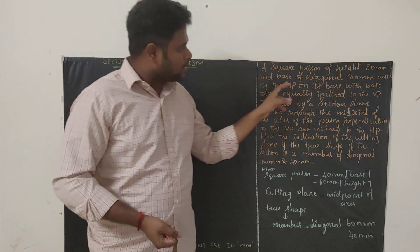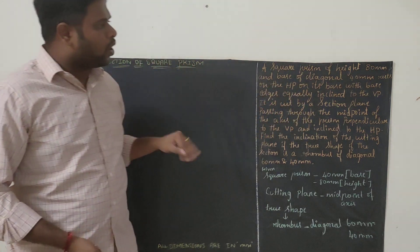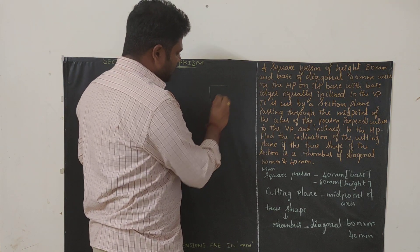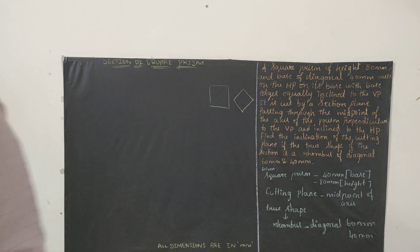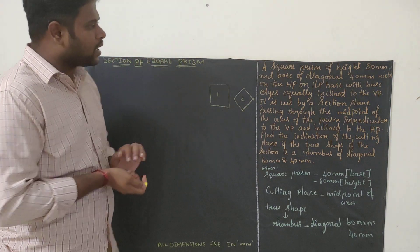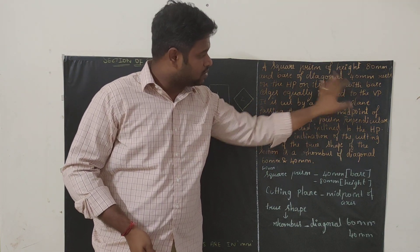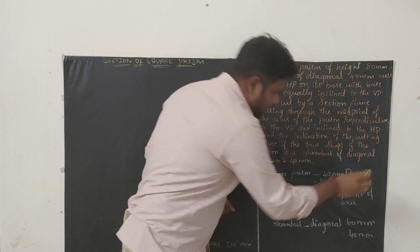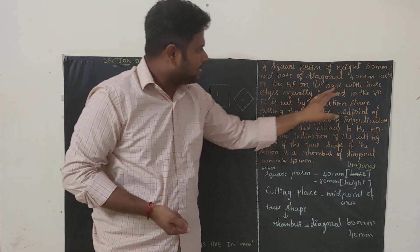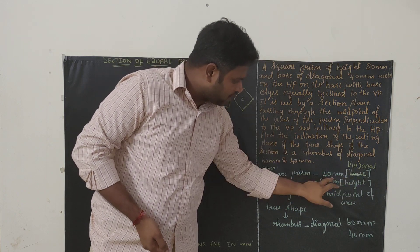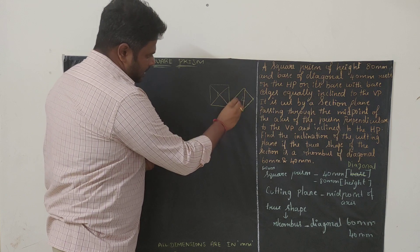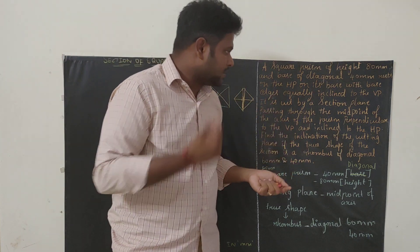This is a square prism of height 80 mm and base diagonal 40 mm. The solid is a square prism, so the base diagram will be a square. We can draw the square either way — these are two types. They haven't given the square as the base measurement — it's actually the diagonal. So the diagonal is 40 mm and the height is 80 mm.